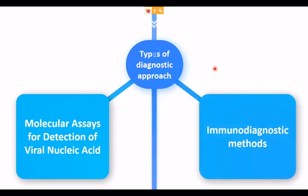There are many diagnostic tests available, and whatever diagnostic test is used falls under one of two categories: molecular assays for the detection of viral nucleic acid, and immunodiagnostic methods. Whatever diagnostic kits we have must fall under either molecular assay or immunodiagnostic methods. We shall start with the molecular assay for the detection of viral nucleic acid.